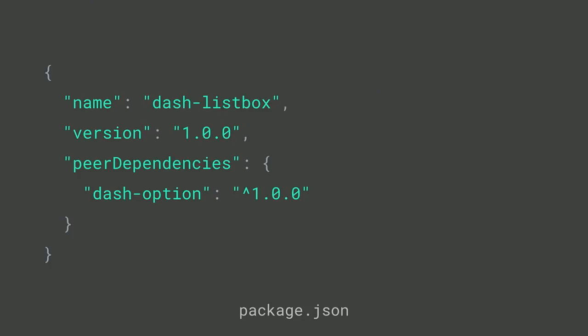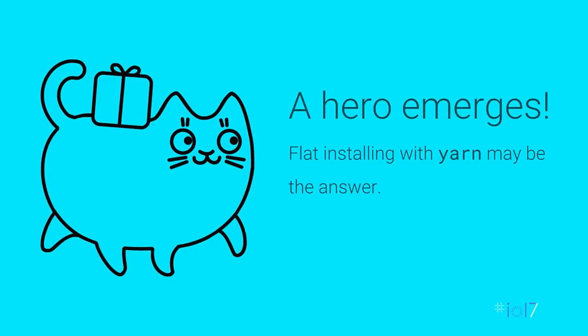With peer dependencies, the list box depending on dash-option as a peer dependency means when someone runs NPM install, it logs a warning saying you have an unmet peer dependency and need to install dash-option at version 1.0. This gives a flat structure in your NPM folder, though the downside is it doesn't install that dependency for you — you've got to manually do that. I'm most excited right now about the Yarn package manager, particularly the flat option, which gives you that same Bower deduplication behavior while still using the NPM registry.